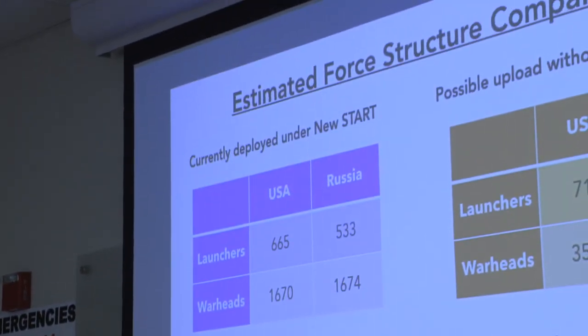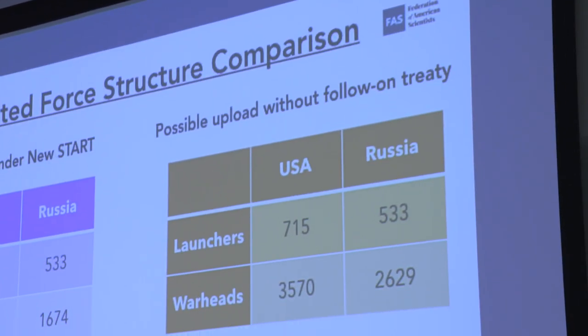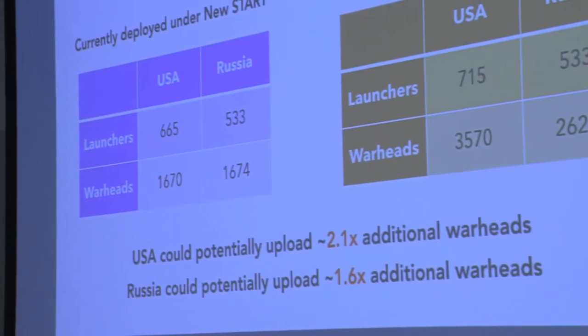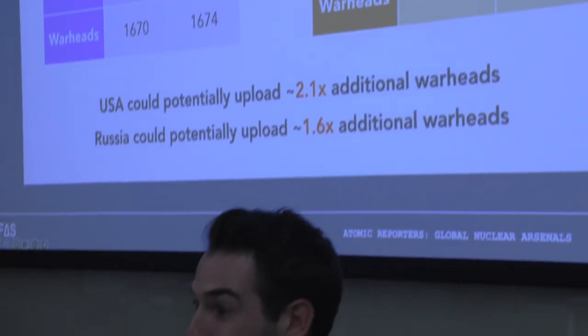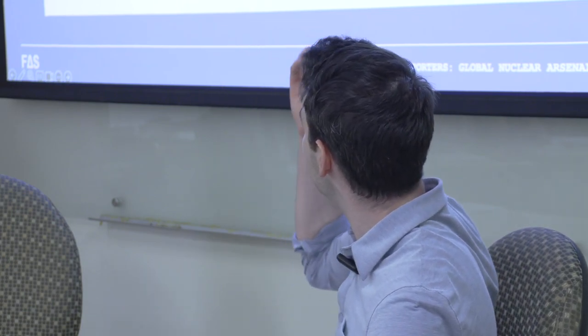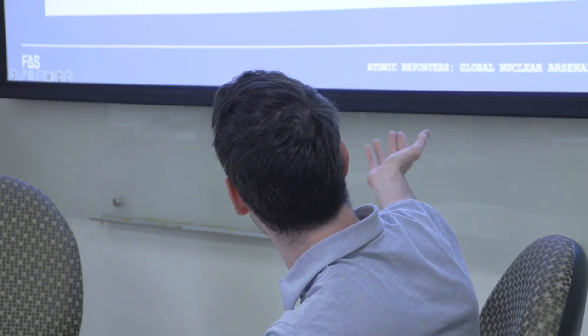On New START specifically: both the United States and Russia have really meticulously planned their nuclear arsenals under the assumption that neither would break out of the treaty. The problem is we're now getting indications domestically in the United States that people are saying we need to break out because Russia will. If both countries decided to break out of the New START Treaty, they could generally speaking double the number of warheads they currently have deployed. Very worrying.